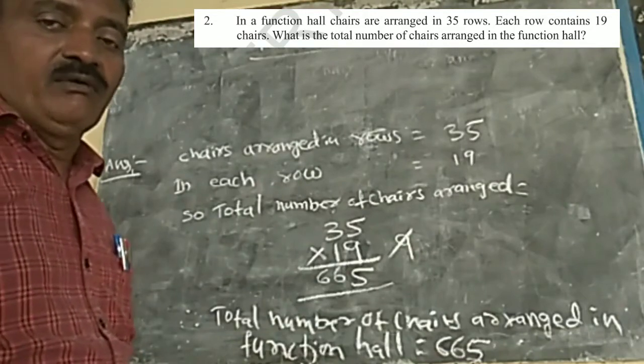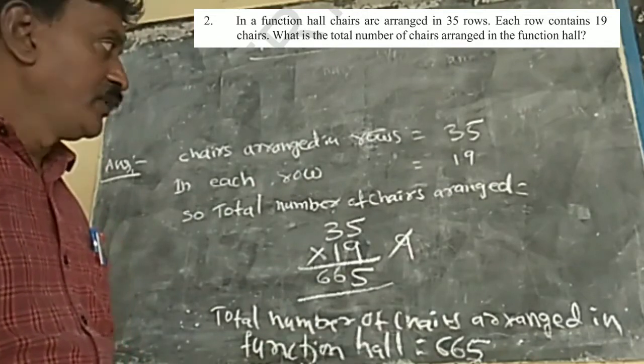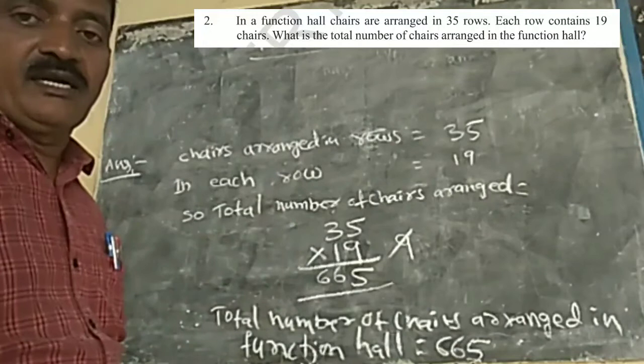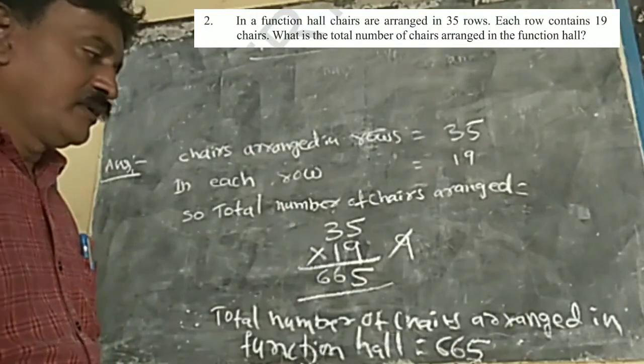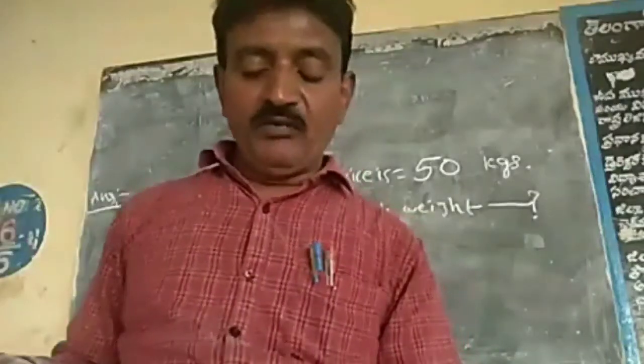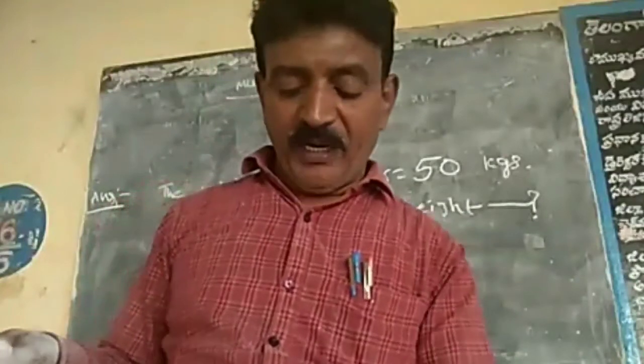So you did not add 1, 2, 3. You did not count. Only simply, you can learn the tables and multiply. Okay, thank you. All of you see, open the book and page number 58.